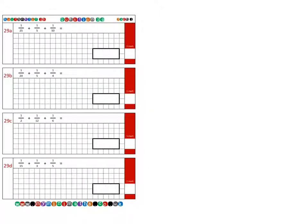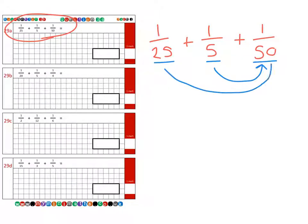So first of all, we're going to look at question 29A. So if we write out the question, that's 1/25 plus 1/5 plus 1/50. Now when I say related, that means these three denominators are all linked to each other. So the 5 will fit into the 50 and the 25 will also fit into the 50. So what we can do is we can change all three fractions so they are all over 50, which is our common denominator, and we're going to add them together.